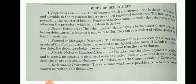Secured debentures, also called mortgage debentures, are those where the company creates a charge on its assets to secure the interest and principal. Unsecured debentures are those where the company makes no promise to secure the interest or principal. The debentures for whose payment of principal and interest no security is given are known as simple or unsecured debentures.